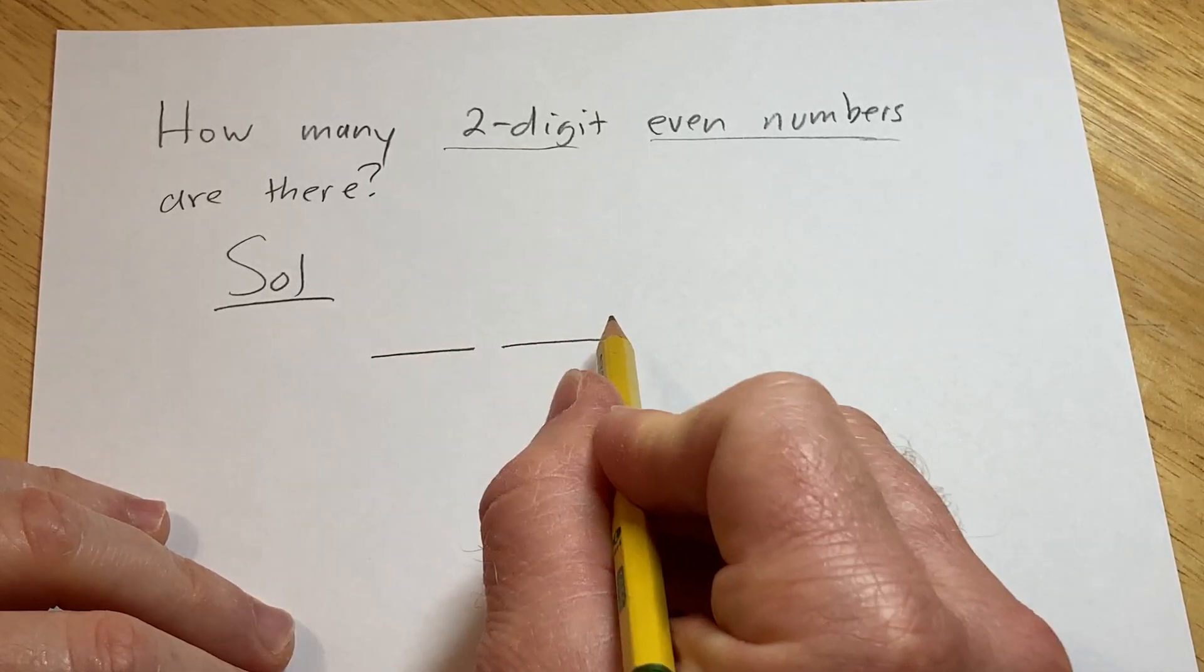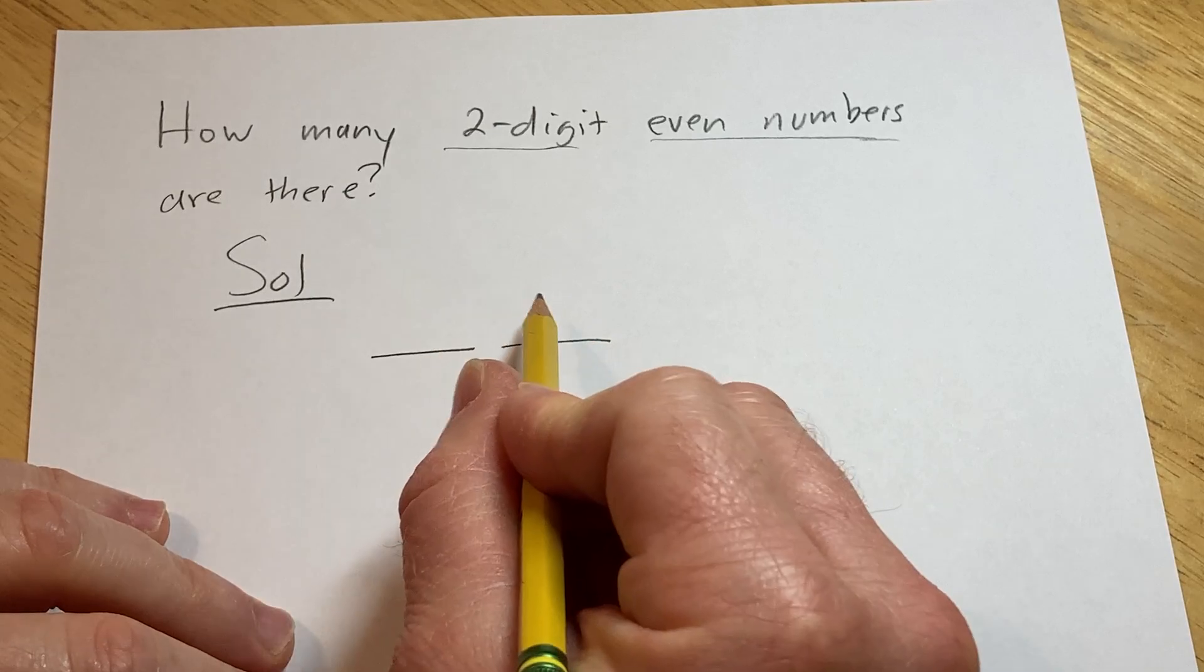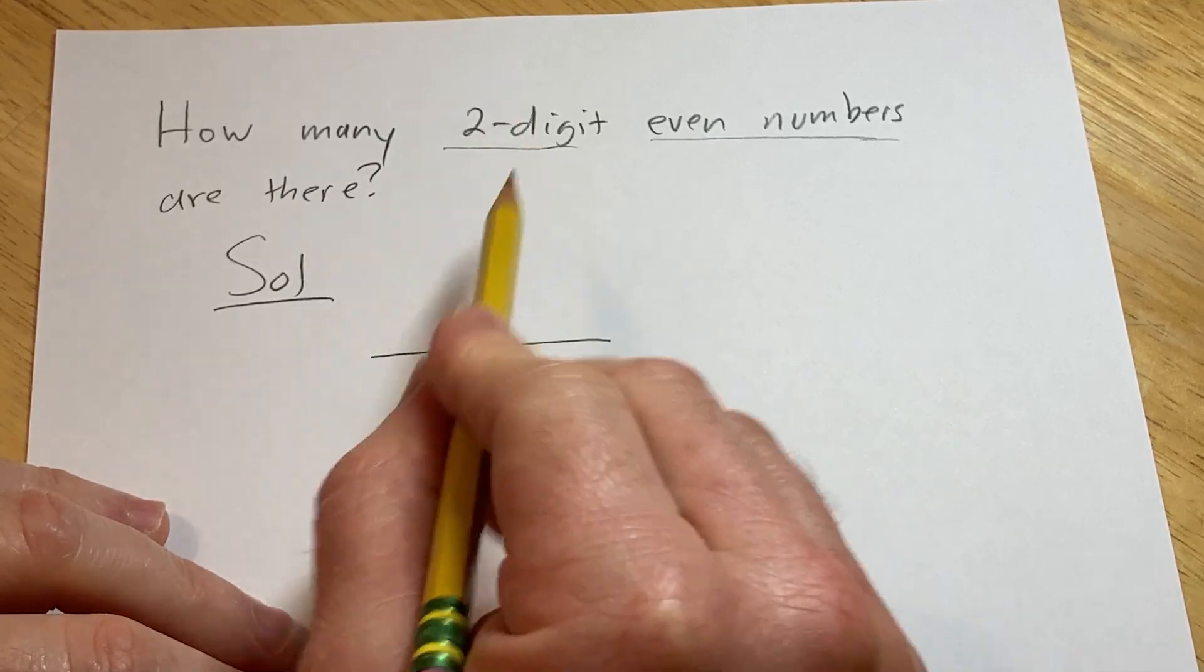So for example, the number eight, although it's even, would not count because we want two-digit numbers.